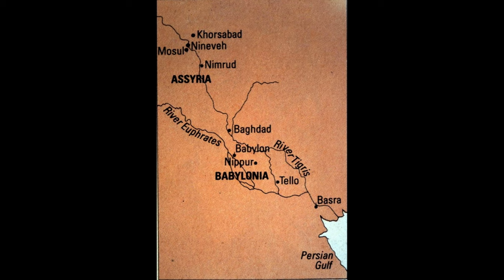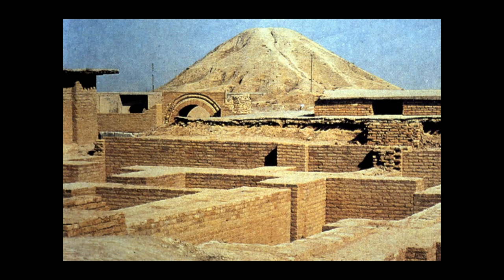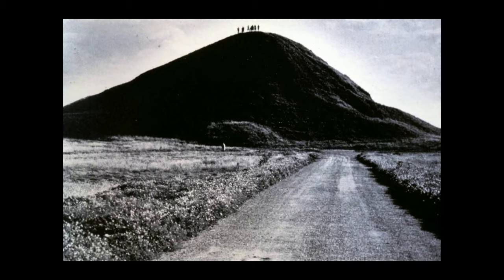Genesis chapter 10 refers to cities built to the north of Babylon in an area called Asher, which later became the centre of the Assyrian Empire. Nineveh and Nimrud were two of the cities mentioned there, which you see at the top of the map. For centuries there was no evidence of these cities. However, during the 19th century, British and French archaeologists unearthed them, a section of which is seen here.